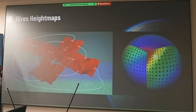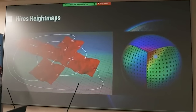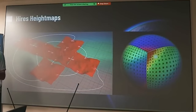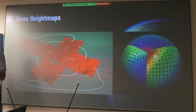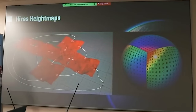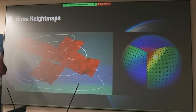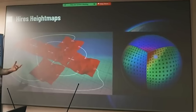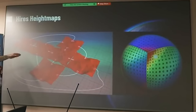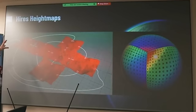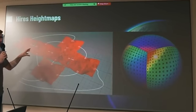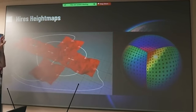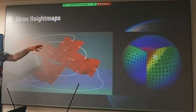Natik starts the presentation by explaining that they have made a move from 2K height maps to 8K height maps in V-Rage 3, or Space Engineers 2. This allows for a greater level of detail and fidelity within the terrain and environment.